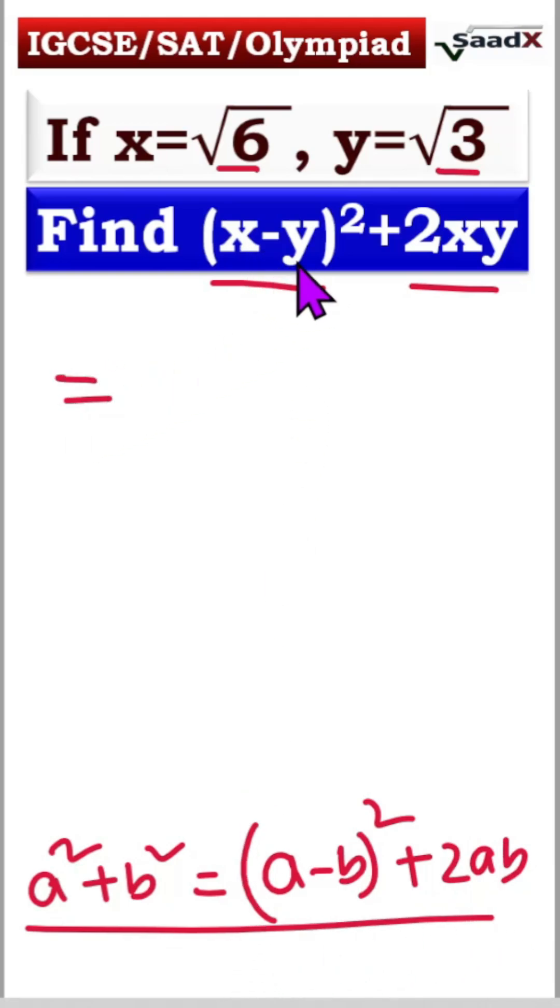Using this identity, x minus y whole square plus 2xy can be rewritten. Is it x square minus y square? No, here is plus. We can write x square plus y square equals a minus b whole square plus 2xy.